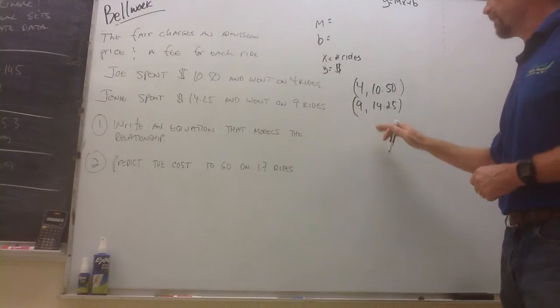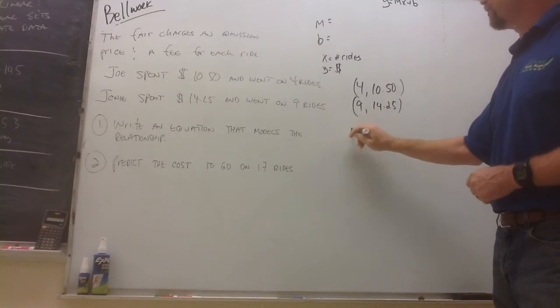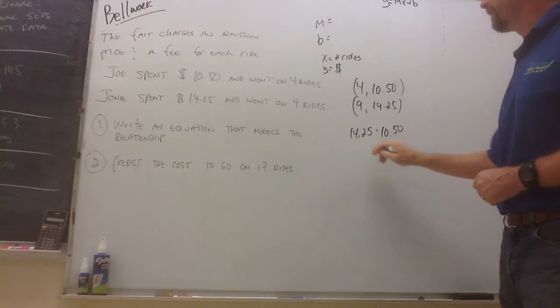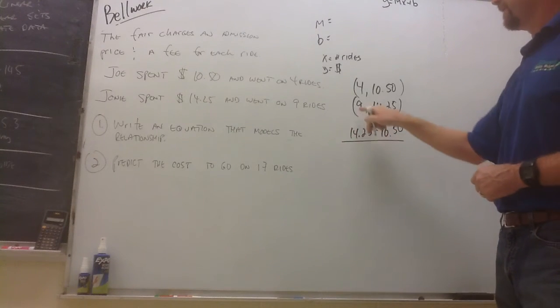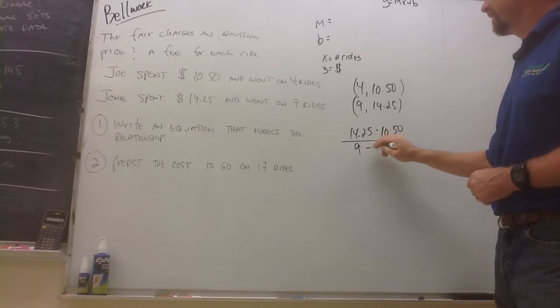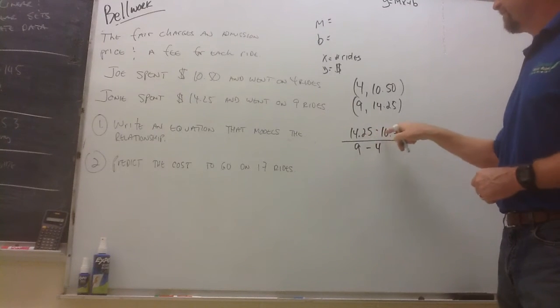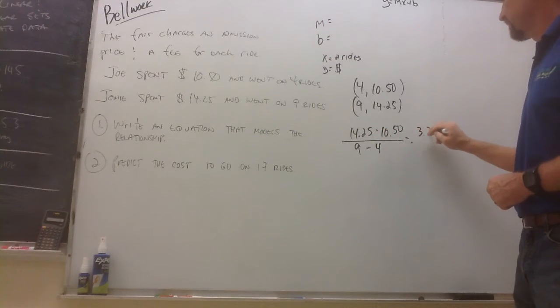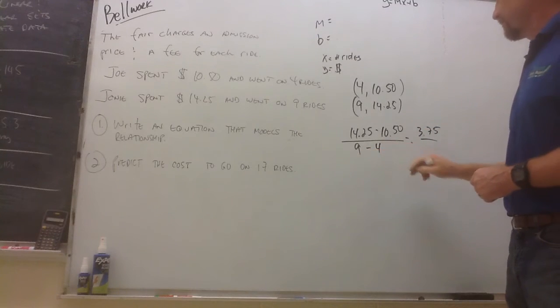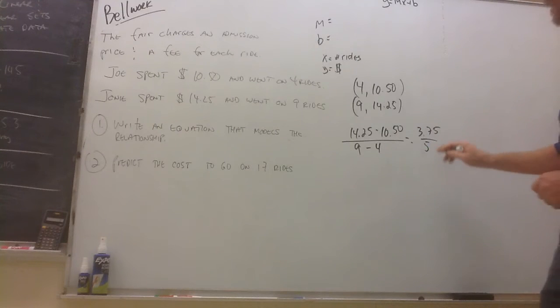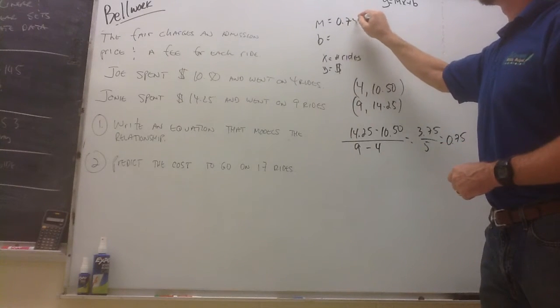Okay, remember slope formula. The y coordinate of point 2 minus the y coordinate of point 1 over the x coordinate of point 2 minus the x coordinate of point 1. Okay, so $14.25 minus $10.50 is $3.75. 9 minus 4 is 5. $3.75 divided by 5 is $0.75. So our slope is 0.75.